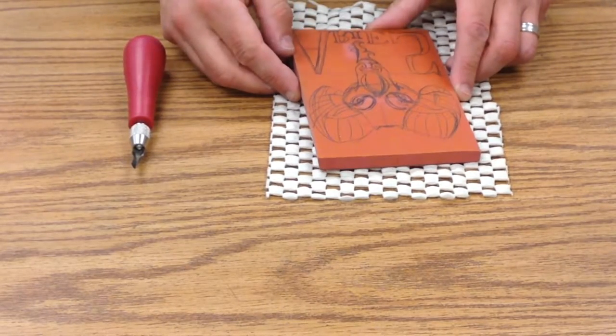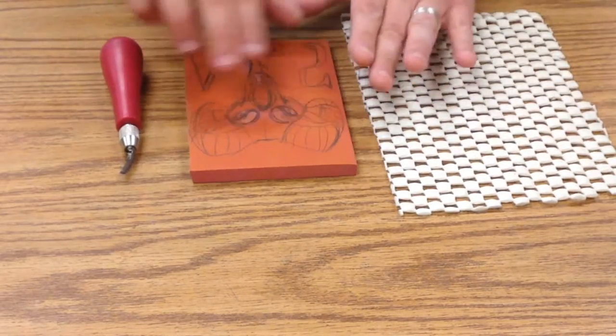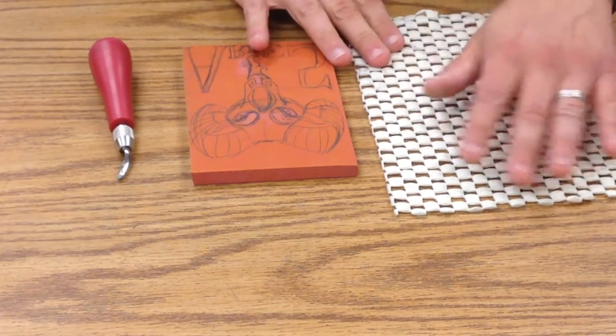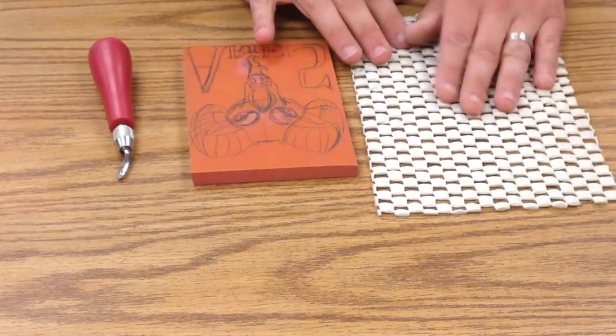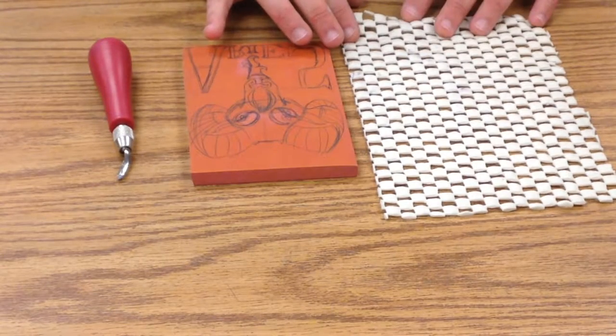Today we're going to carve a linoleum block and I've got a couple of tools here. I've got the linoleum block that I've already done my sketch on, and then I've got this non-skid mat that I'm going to use as an alternative to the bench hook.